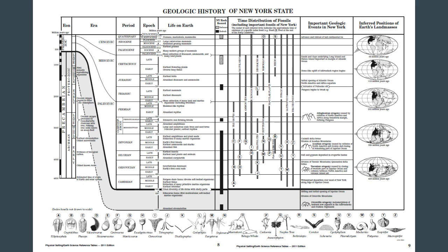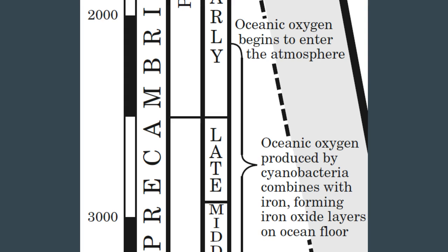Before we move on to life on Earth, it's important to take a closer look at something extremely significant in terms of the development of life on Earth. We're going to zoom in through the magic of digital wizardry. We see that oceanic oxygen produced by cyanobacteria combines with iron, forming iron oxide layers in the ocean floor. And then later on, oceanic oxygen begins to enter the atmosphere, which is very important for oxygen breathing organisms like ourselves. This starts to happen in the middle Archean and ends in the early Proterozoic - which is significant for life on Earth.